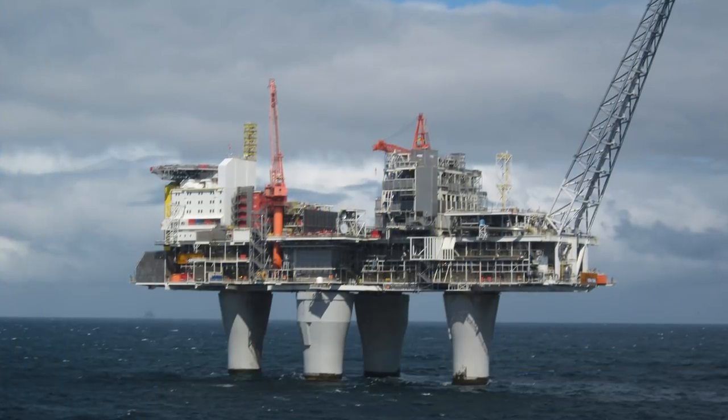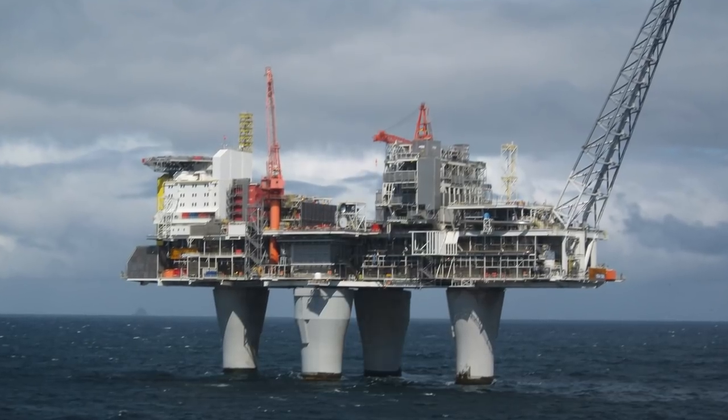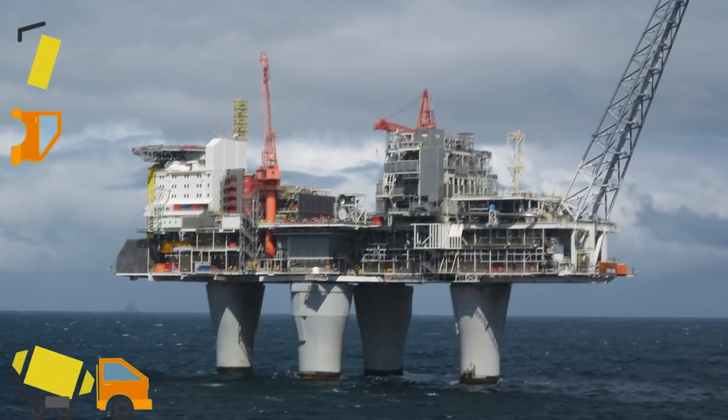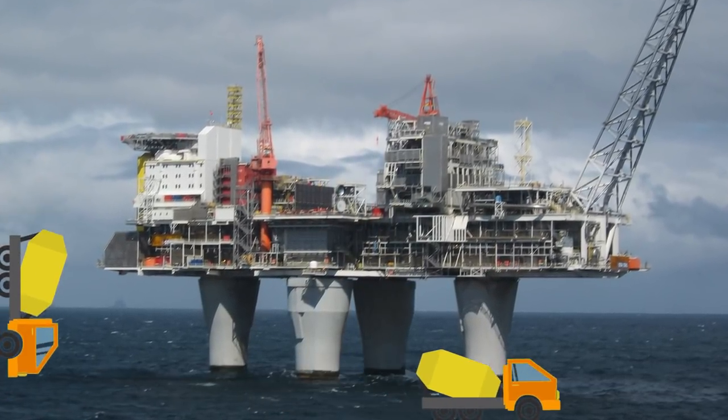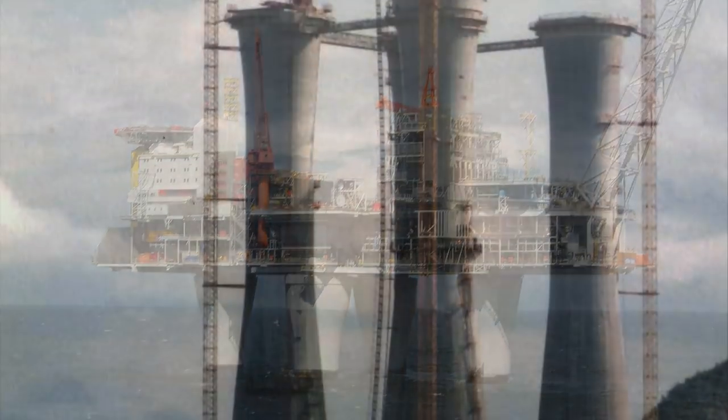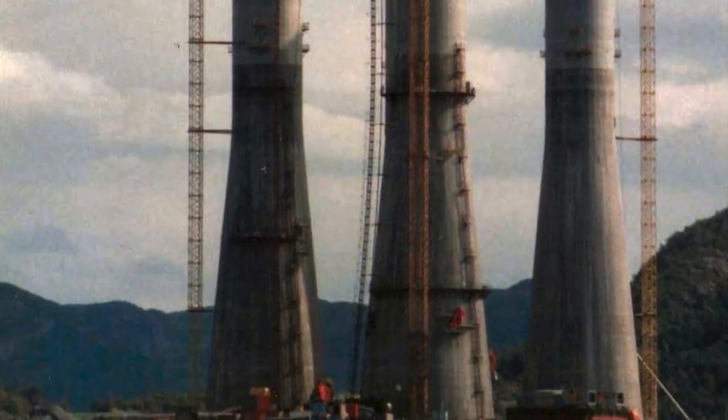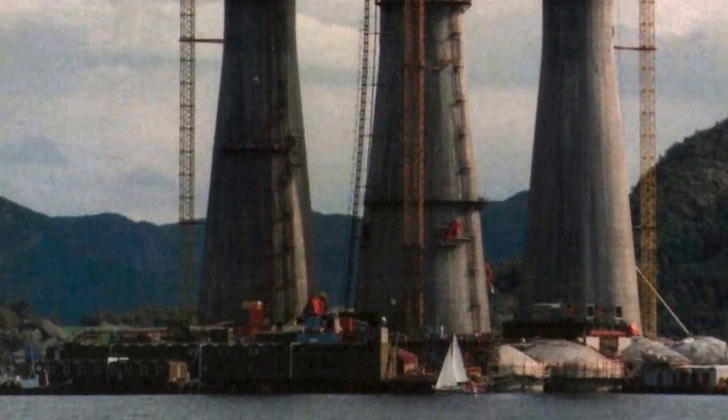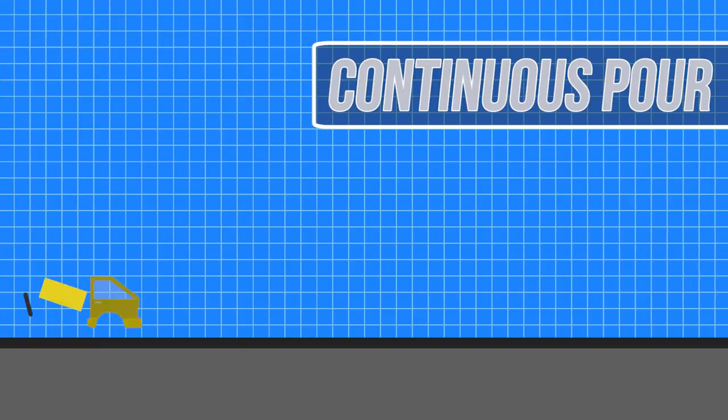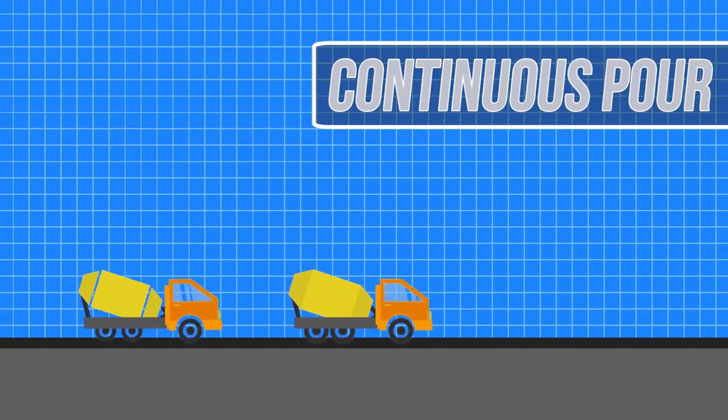Each of the legs of the Troll A platform are over 3 feet thick and made of steel-reinforced concrete formed in a continuous pour. This may not sound impressive, but facilitating the creation of these legs was an engineering marvel all its own. A continuous pour was needed to achieve the proper strength for each leg.